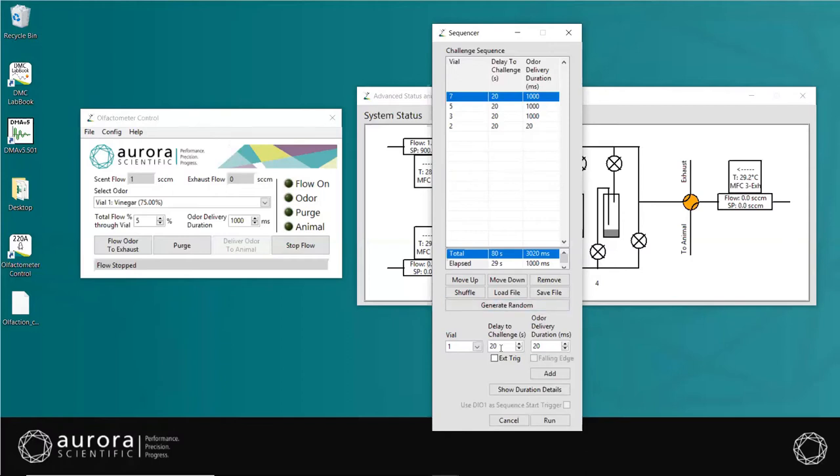Set the delay to challenge, which has a minimum of 20 seconds and the duration of odor delivery of at least 20 milliseconds. If you'd like to trigger the release of this vial or odorant with external software, check the box next to External Trigger, which will allow the user to trigger using a rising edge TTL pulse. If you'd like to stop the flow of the odorant as well using a falling edge, check this box too. In addition, if you wish to trigger the start of the entire sequence as written, check the box beside Use DIO1 as Sequence Trigger, which will initiate the sequence once a rising edge TTL pulse is sent via an external source, such as a microscope imaging program. Note that this will only become available once an external source is plugged into DIO1 on the front panel.